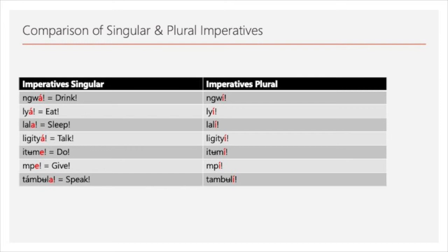My second question was whether there are different imperative forms for the singular and plural 'you'. There are — it's quite simple: the plural 'you' imperative always changes the final 'a' to an 'e'. So 'drink' in the singular imperative is 'inwa' and in the plural it's 'inwe'; 'eat' is 'ya' and 'ye'; 'sleep' is 'lala' and 'lali', and so on.